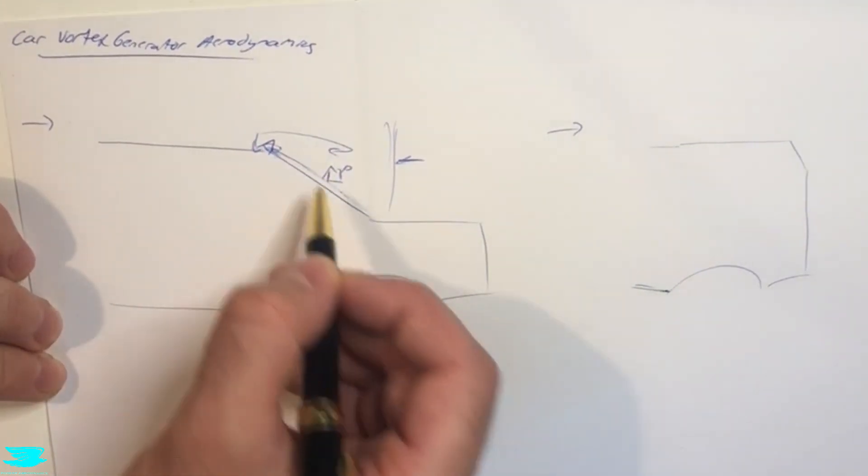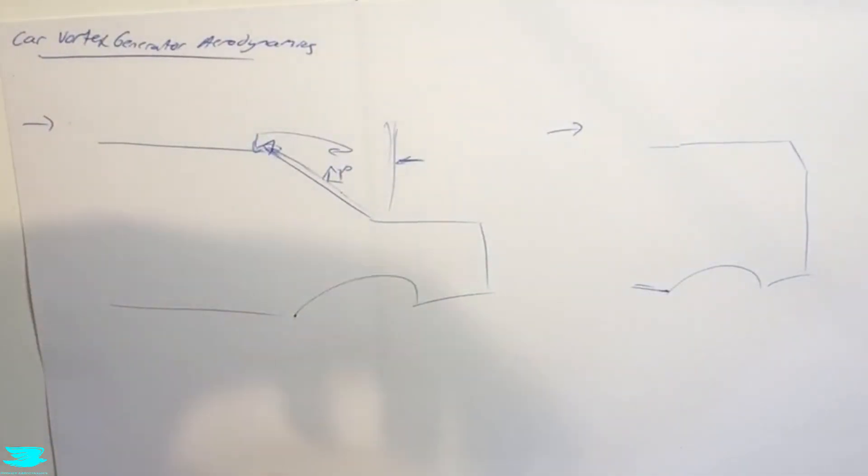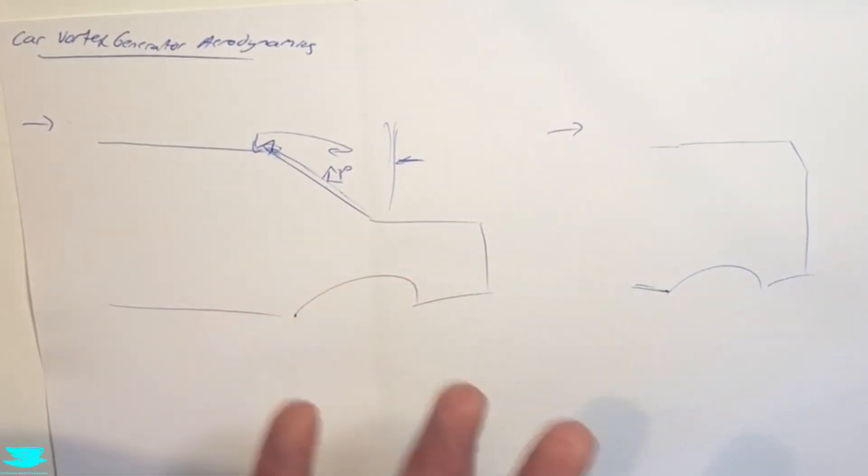By having the flow reattach through these vortex generators in mixing the environment fluid into the boundary layer, we can get a higher pressure here, which means that the car is being pushed down more into the ground. That results in more downforce and particularly over the rear of the car.